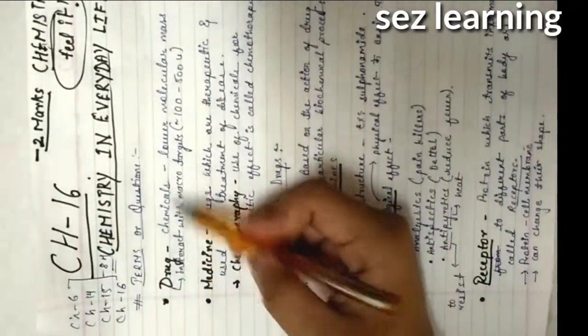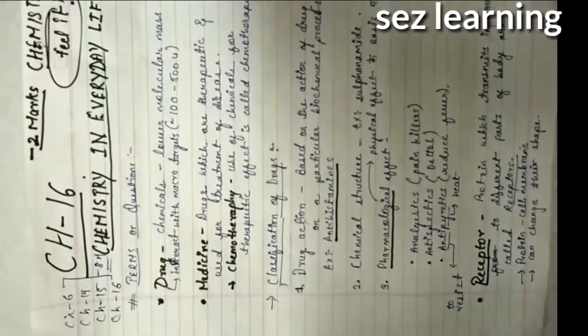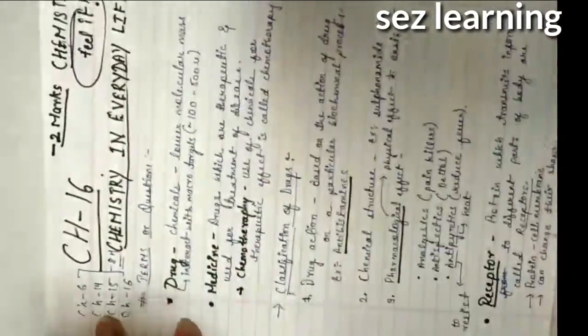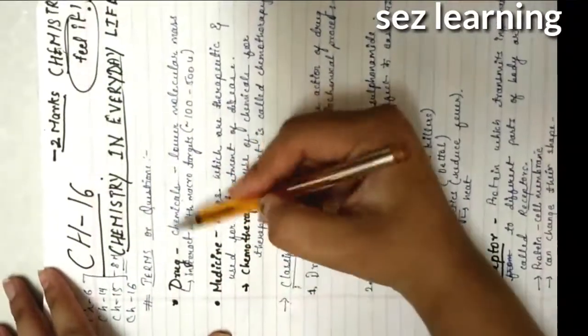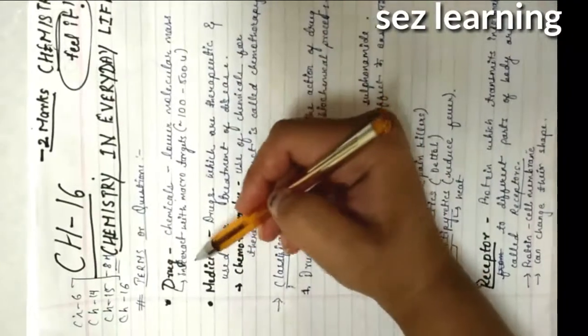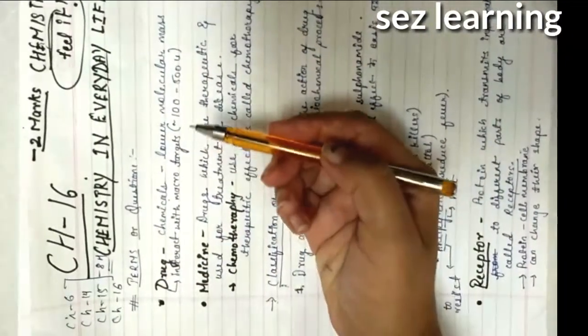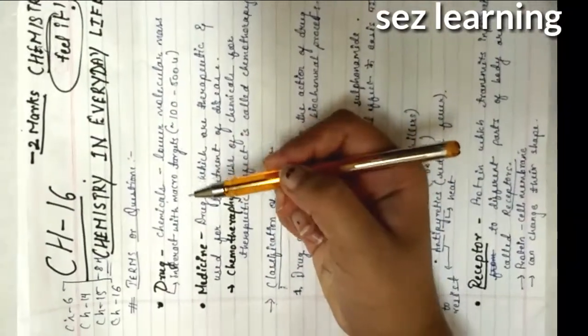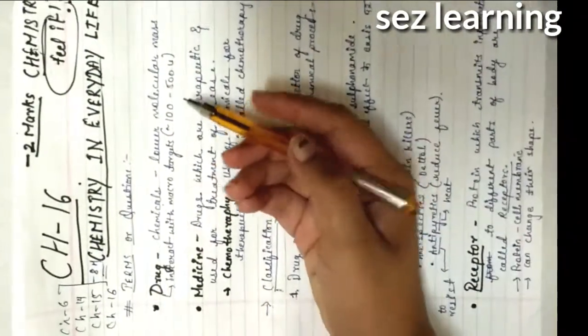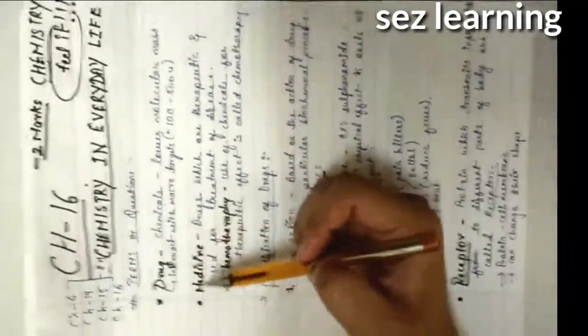Again guys, this chapter is purely theory, so you need to learn whatever is written. Drugs are chemicals with lower molecular mass that interact with macromolecular targets. Their molecular mass is low and they interact with macro targets.